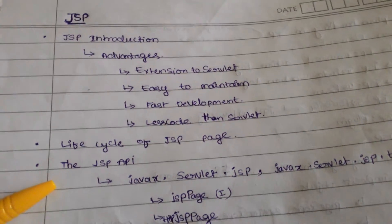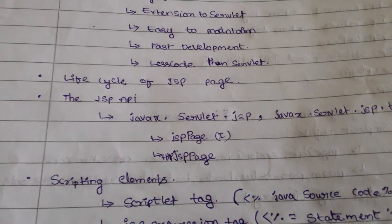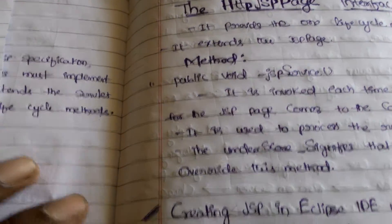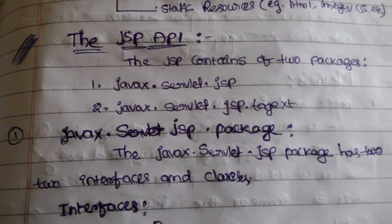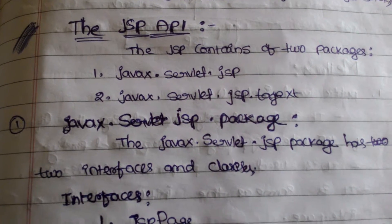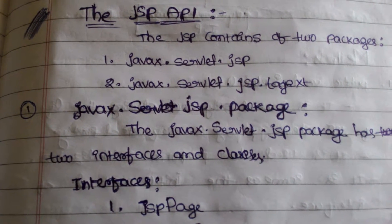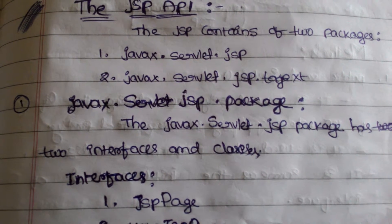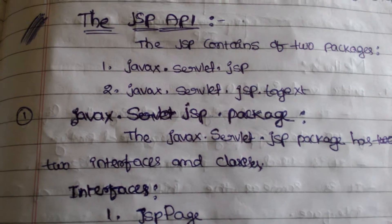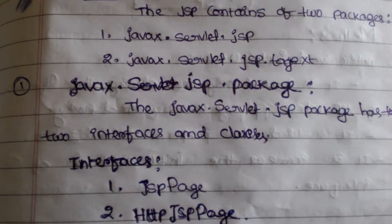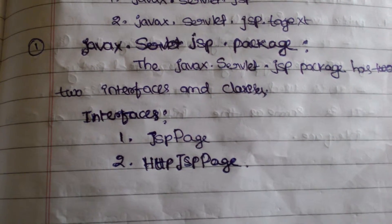Now you will see the JSP API and scripting elements of JSP. In JSP API we have two packages: javax.servlet.jsp and javax.servlet.jsp.tagext. These two packages are inside the JSP API. The javax.servlet.jsp package has two interfaces and some classes.